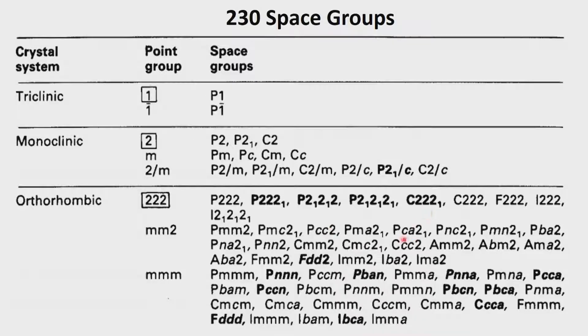We have been looking at the total space groups in the form of a table, which is very useful for cross references. It tells us about the lattice symmetry as well as the symmetry associated with the space group — the point group symmetry. It also tells us about the distribution of centric and non-centric systems in triclinic, monoclinic, orthorhombic, and other crystal systems.